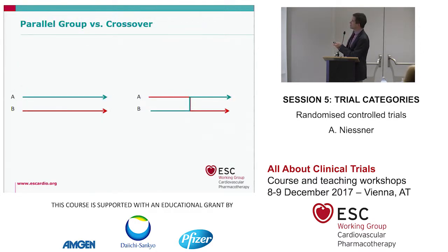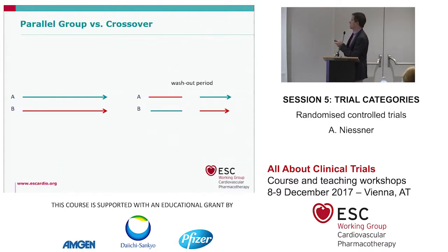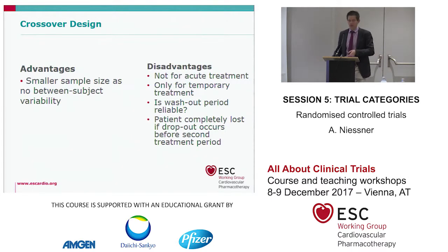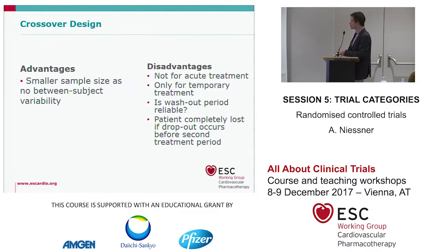About variations in trial design: the usual design is a parallel group design where group A gets one treatment and group B gets another. A crossover design means group A starts with one treatment then switches, and group B starts with the other and switches — usually with a washout period in between. The advantage is a smaller sample size since each subject is their own control. Disadvantages include inability to use it for acute or permanent treatment, concern about washout reliability, and complete patient loss if dropout occurs before the second treatment period.